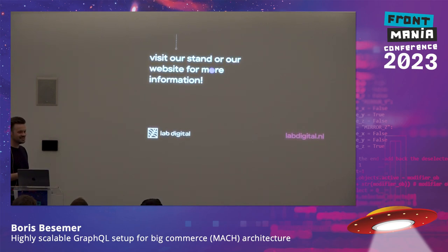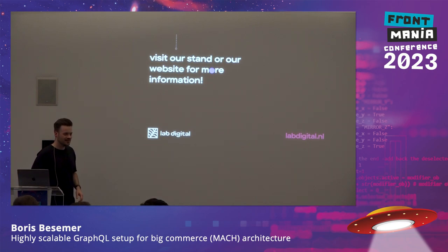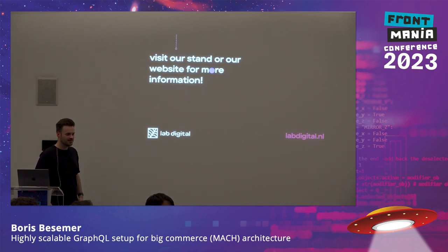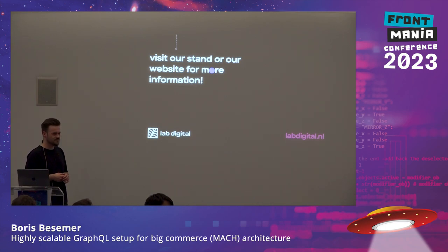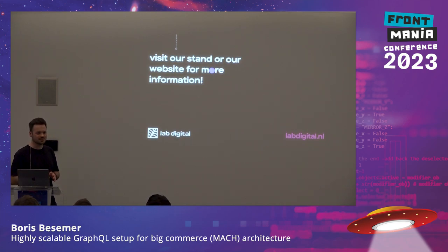That's my talk. If you have any questions, please let me know. The question is: all the examples used GraphQL endpoints — what about other endpoints that aren't GraphQL, like some other type of service? How do you build the federation then?